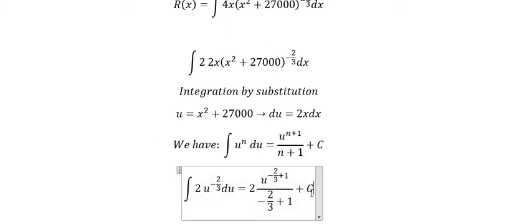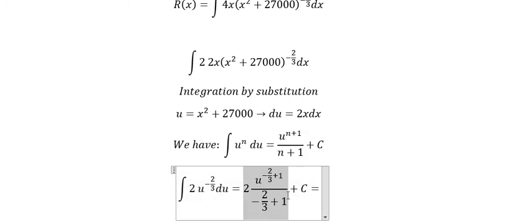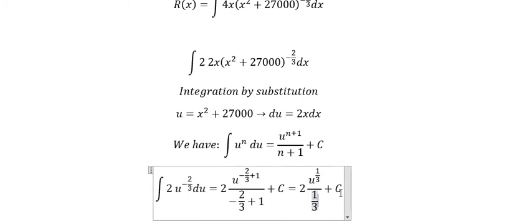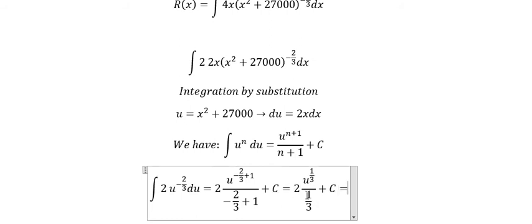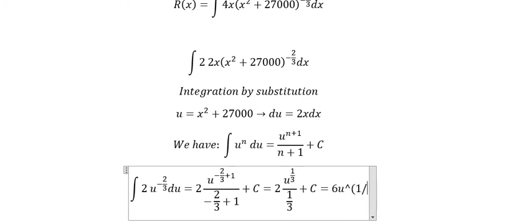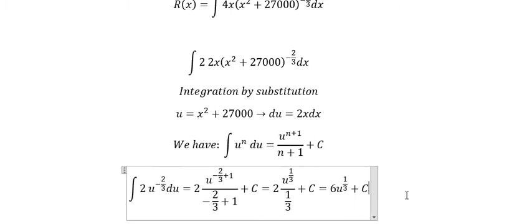We simplify. This gives 1/3. Number 3 goes to the numerator and you get 2 times 3 equals 6. So you get U to the power of 1/3, plus C.